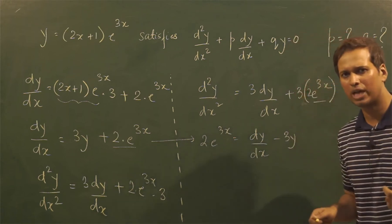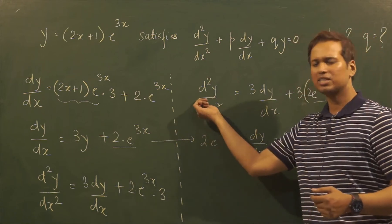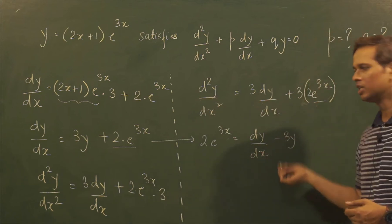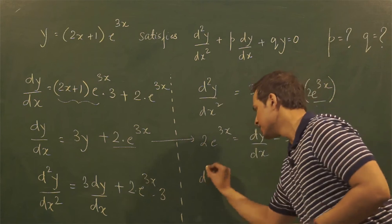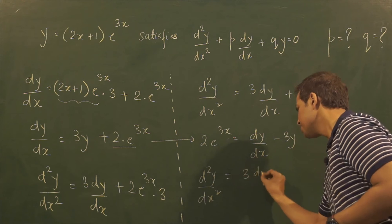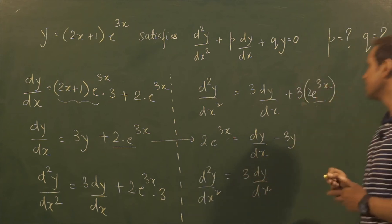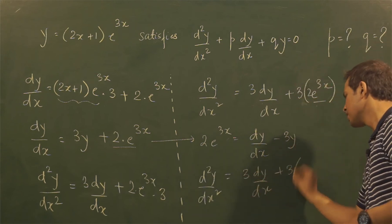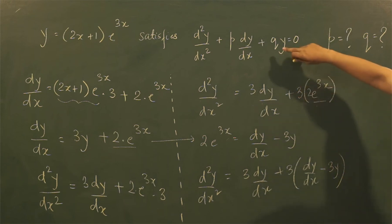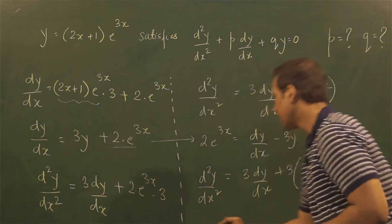In other words, what I will do now is I will keep this term as such, this term as such, but replace this term with this expression. So I will rewrite this as d²y/dx² is equal to 3 dy/dx plus 3 times (dy/dx minus 3y). So by doing this I have become very close to this type of expression. So if I open the expression, I will realize that